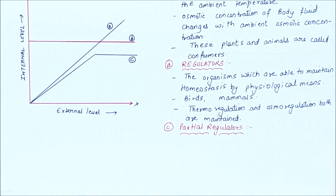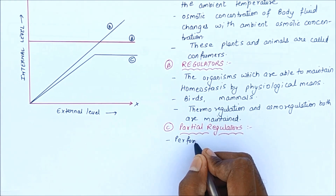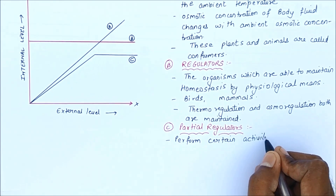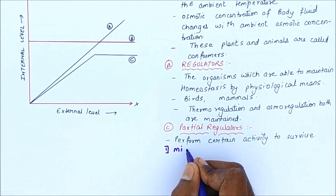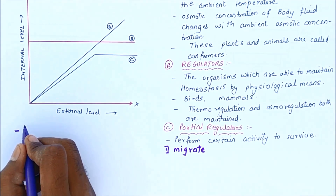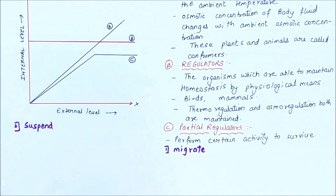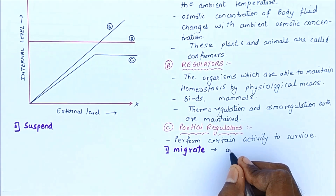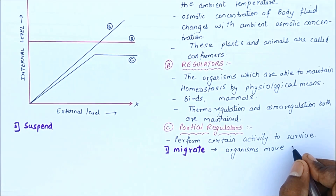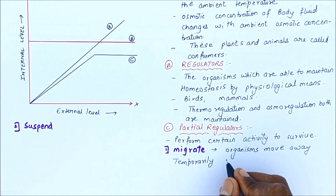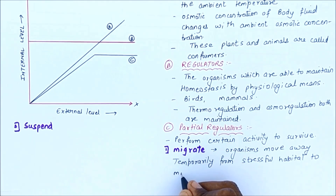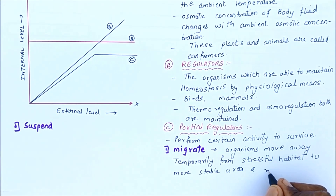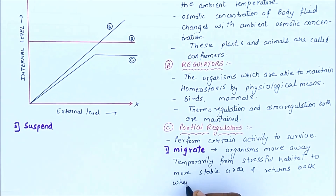Partial regulators perform certain activities to survive in unfavorable conditions. One such activity is migration — organisms move temporarily away from a stressful habitat to a more stable area and return when conditions are good again. If they cannot adjust to unfavorable conditions, they at least migrate. A simple example is the Siberian crane, which migrates from Siberia to India — this is a method of adaptation.